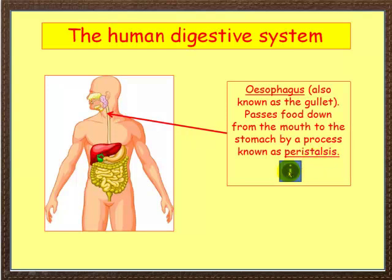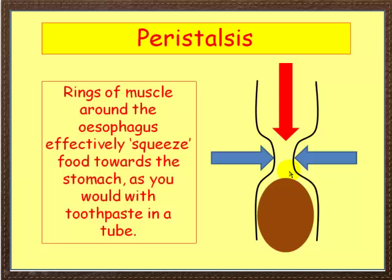What is peristalsis? Well, it's like squeezing a tube of toothpaste. What happens is muscles here contract behind the food, so rings of muscle around the oesophagus squeeze.